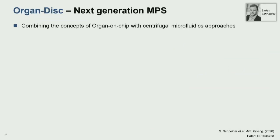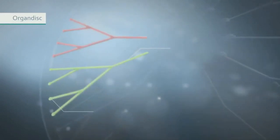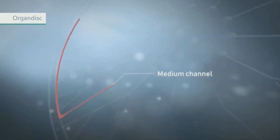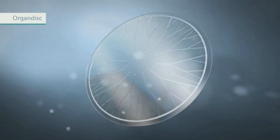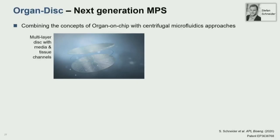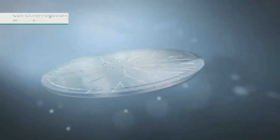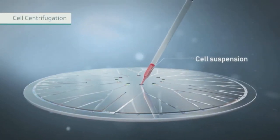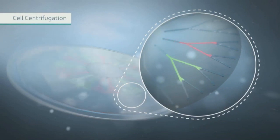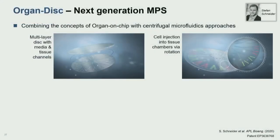One of our approaches for that is what we call the organ-on-a-disk technology, which combines centrifugal microfluidics with organ-on-a-chip models. We work with disc-shaped polymer modules that have cell channels, tissue channels, media channels, and membranes. The cell channels run radially from inside to outside and have tissue chambers at the end. We can pipette a cell suspension into the central inlets — using a pipette robot — put the disc in a CD player, press play, and centrifugal forces transport all cells into the tissue chambers to form dense 3D tissues without any manual handling.